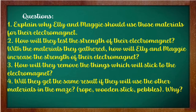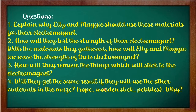Here are some questions for the activity. Explain why Ellie and Maggie should use those materials for their electromagnet. Those materials that we answered a while ago — please explain why they should use those. Number 2: How will they test the strength of their electromagnet? How will Ellie and Maggie increase the strength of their electromagnet? How will they remove the things which will stick to the electromagnet? Number 4: Will they get the same result if they use other materials? You are going to answer those questions after answering the activity. Don't worry — we have sample answers in the last part of this video.